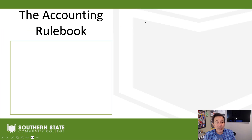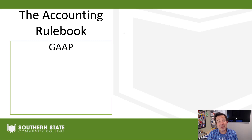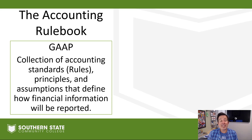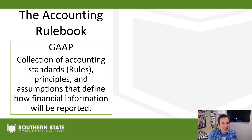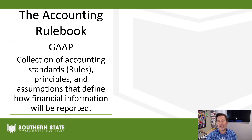We call our accounting rulebook GAAP. GAAP stands for Generally Accepted Accounting Principles. All that means is we have a collection of accounting standards, principles, and assumptions that define how financial information will be reported to the public. Pretty much every business follows GAAP. Unless we're talking about a small business that does cash basis accounting, all publicly traded companies follow GAAP, and many non-publicly traded companies also follow GAAP.